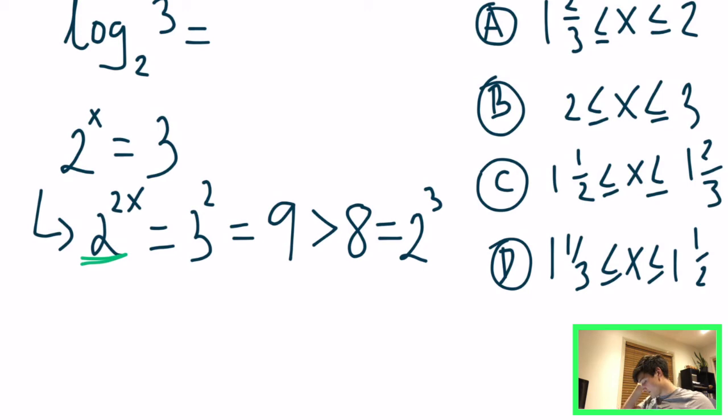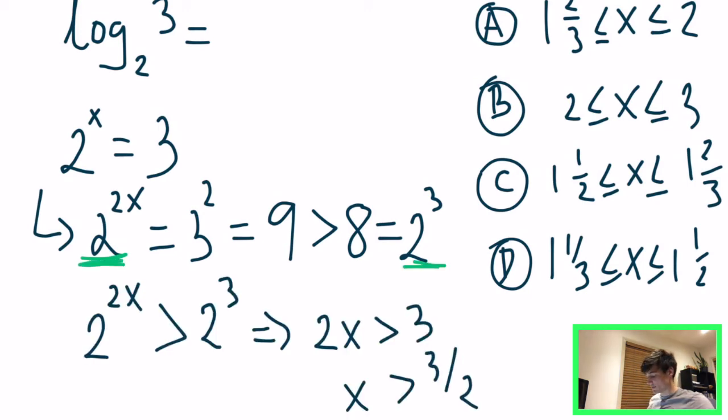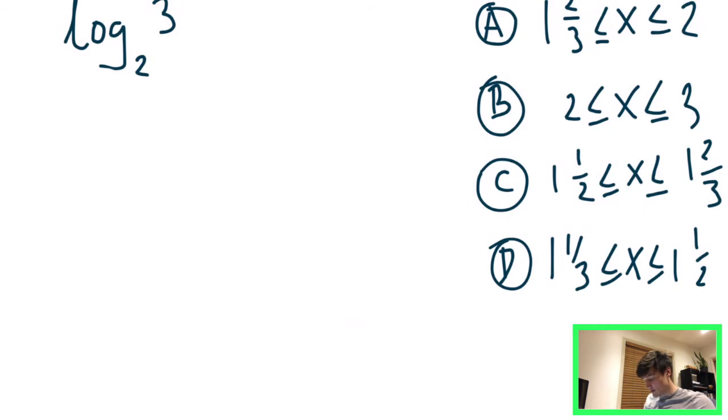So from here, I already know it's one and one half and that is the only answer here. So we think I would already say that it's probably C but to conclude this problem, we're going to go and find the upper bound now. So similar approach, we're going to say 2 to the power of X is equal to 3, just as before. But this time we are going to raise both sides to the power of 3. So we get 2 to the power of 3X and 3 to the power of 3. 3 to the power of 3 carries on through to become 27.